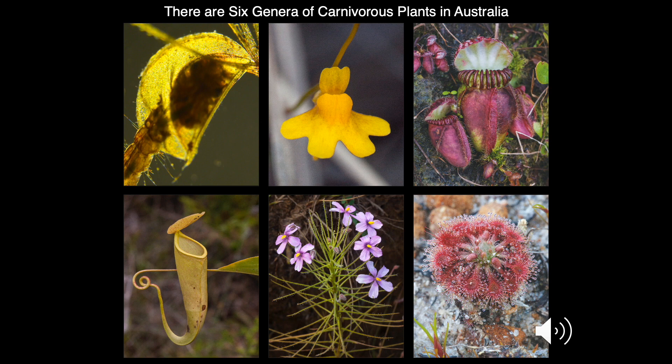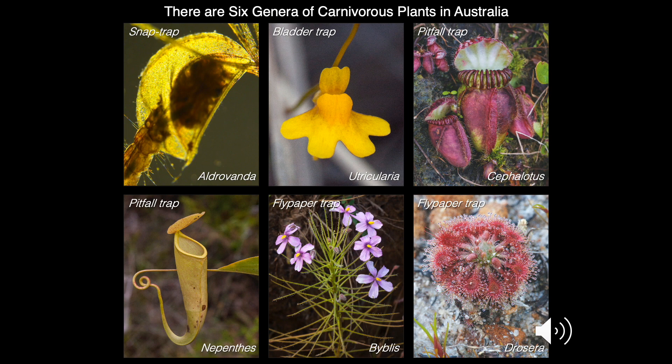These include the snap traps — we don't have the Venus flytrap, but instead we have its aquatic cousin Aldrovanda. The bladder traps, Utricularia, represented by about 70 species Australia-wide. The pitfall traps, represented by the unique Cephalotus, as well as three species of Nepenthes. And the flypaper traps, falling into two genera: Byblis, with about eight species, and Drosera, with 250 species worldwide and 160 in Australia.